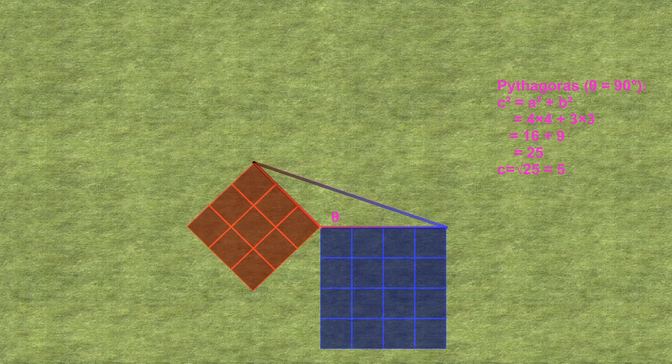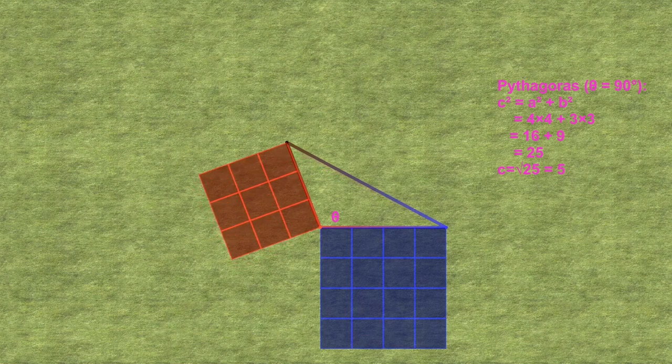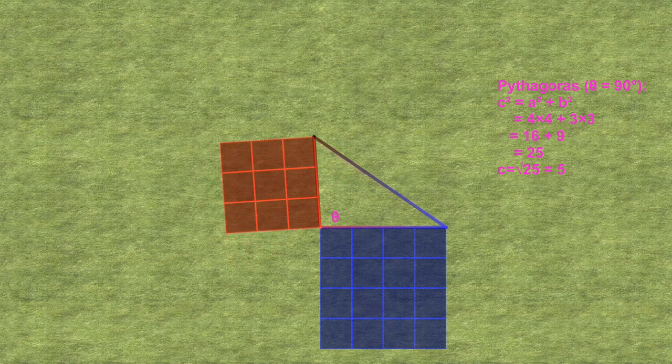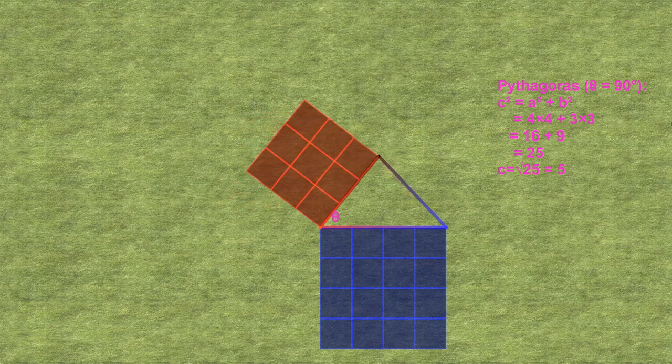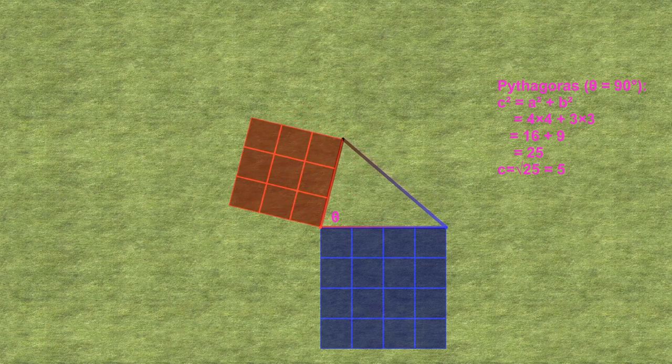But what do we do when the triangle is not right angled? When the previous right angle increases to larger than 90 degrees, the side that was previously the hypotenuse gets longer. And when the angle decreases, the side shortens. But how can we tell by how much?